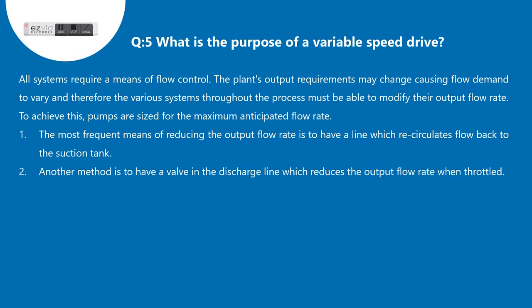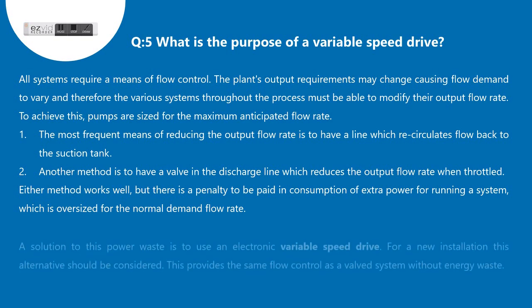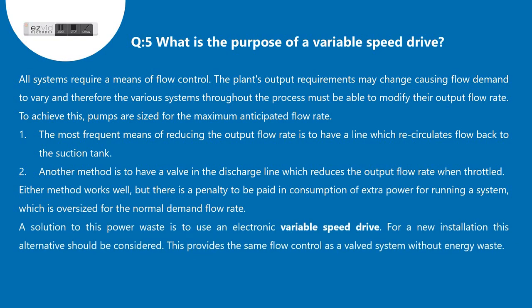Another method is to have a valve in the discharge line which reduces the output flow rate when throttled. Either method works well, but there is a penalty to be paid in consumption of extra power for running a system which is oversized for the normal demand flow rate. A solution to this power waste is to use an electronic variable speed drive. For a new installation this alternative should be considered.